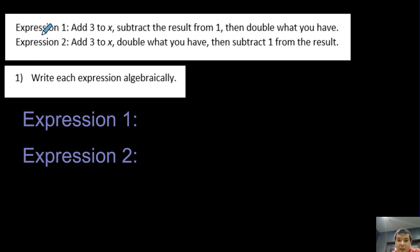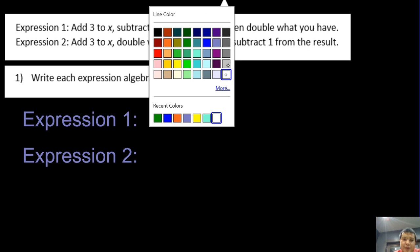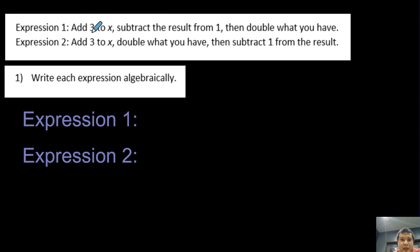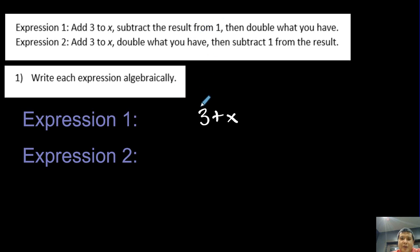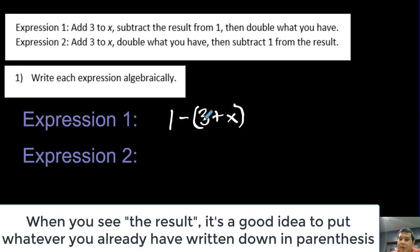Now consider two verbal expressions. Expression 1: add 3 to x, subtract the result from 1, then double what you have. When we write this out, add 3 to x gives us 3 plus x. Subtract the result from 1 means 1 minus the entire quantity, so we write 1 minus (3 plus x) in brackets. Then double what you have means multiply that entire thing by 2.